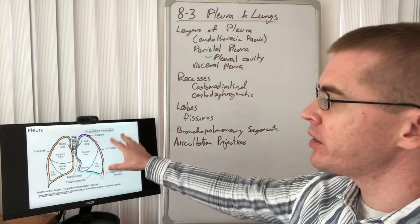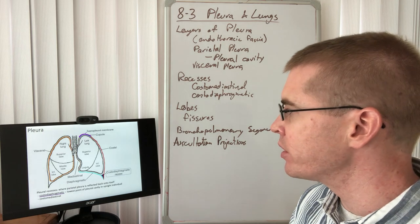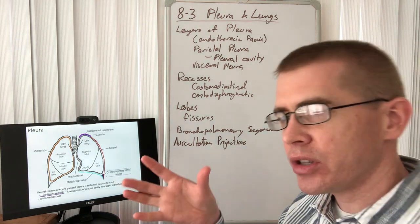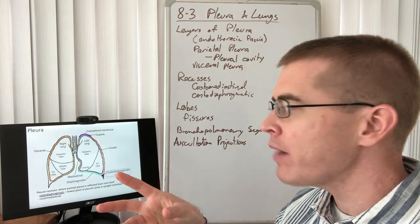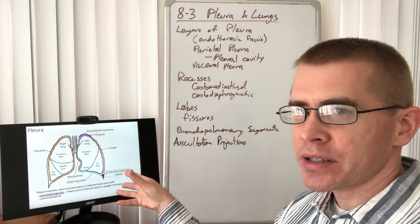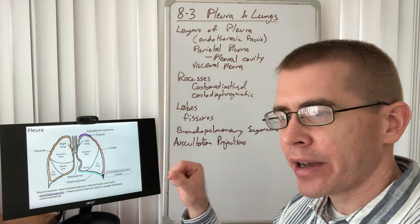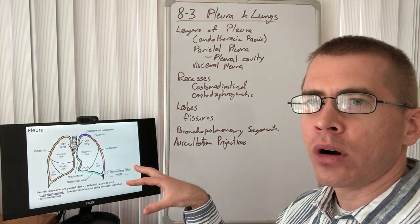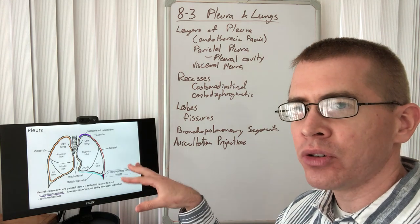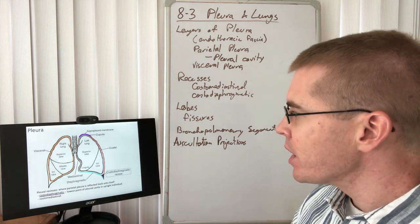We already talked about the endothoracic fascia, and there you can see the association. Because of the shape of the pleura and the pleural cavity, there are some recesses, some spaces that are named which have clinical significance because fluid or air can build up in these spaces and impact the expansion of the lungs.